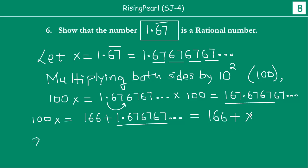So this implies, if you are going to get the x to this side, this will become 99x equal to 166, which implies x is equal to 166 divided by 99.